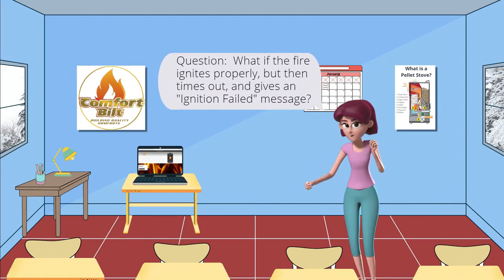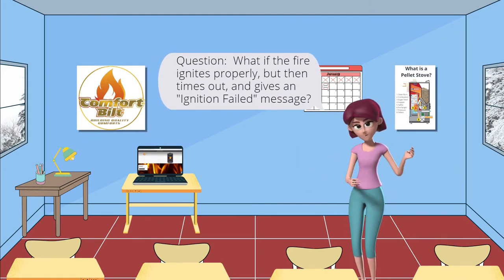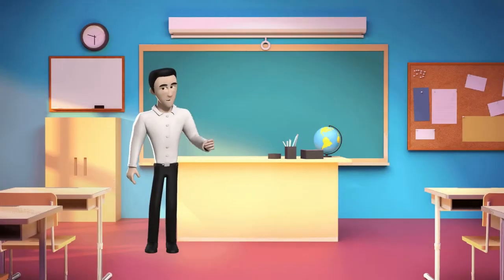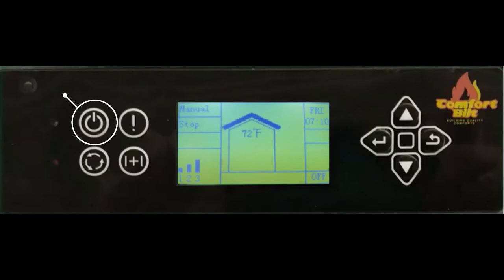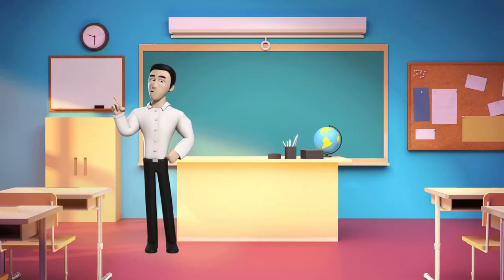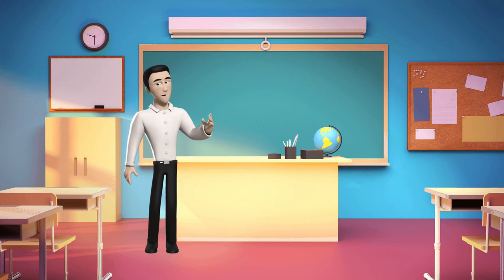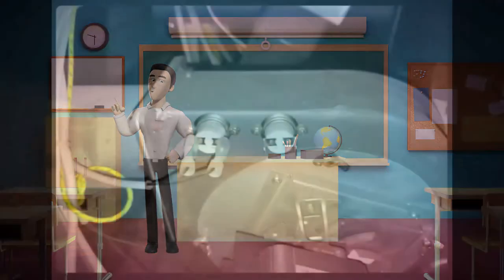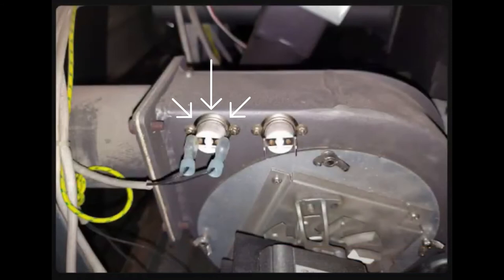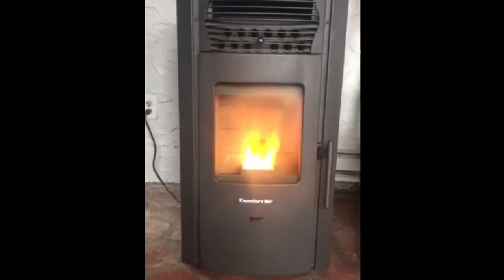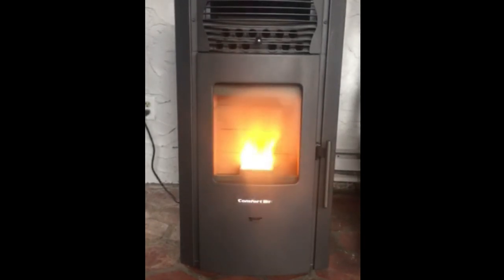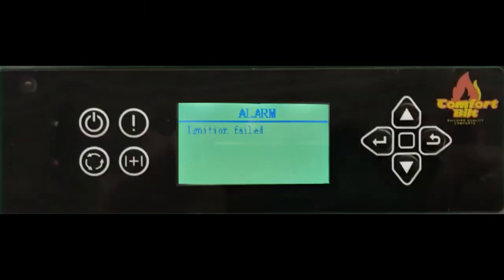What if the fire ignites properly but then times out and gives an ignition failed message? When you press the on-off button, the stove starts all three of these main systems to get the fire started. Once started, the stove allows 10 to 15 minutes for the heat to build up at the exhaust housing, which triggers the proof of fire sensor. Once this POF switch engages, the stove will go into heating mode and the blower fan will engage. When everything appears to be working and a decent fire starts within the first few minutes of operation and maintains a decent fire throughout the ignition phases, but still triggers the ignite fail message.